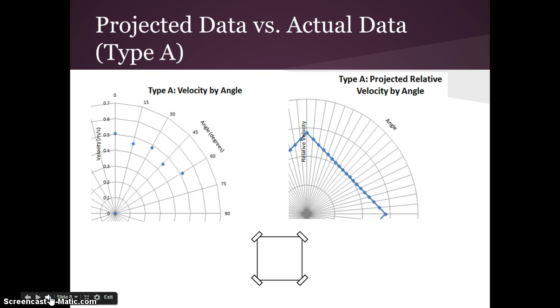So for the first one, which I called Type A, you can tell that the computer simulation and the actual speeds matched up pretty well, but not that precisely. There was a lot more variability in the actual speeds, as you'd expect.